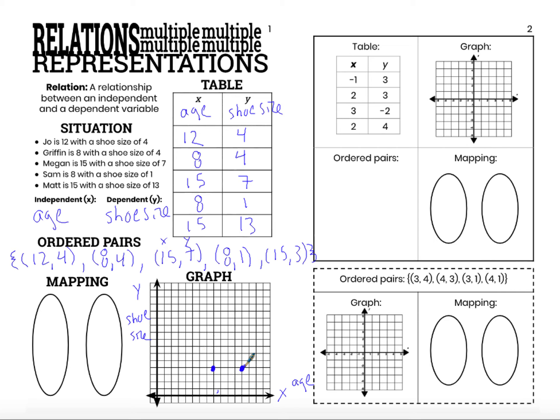Megan is 15. So I'm going to go from 12, 13, 14, 15. Megan is 15 with a shoe size of 7. So 4, 5, 6, 7.